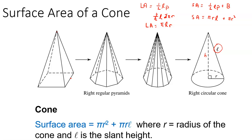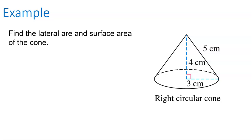If I memorize one-half slant height times perimeter for the lateral area of a pyramid, it works just as well for the lateral area of a cone. Let's try one: a right circular cone. I want to find lateral area and surface area. The slant height is 5. They could have just given me the 3 and the 4 and I could have used the Pythagorean theorem to get 5, but the slant height is 5. The radius of the base is 3.